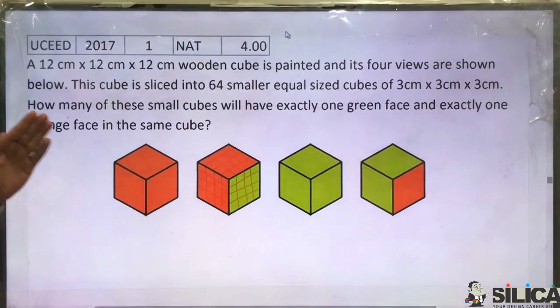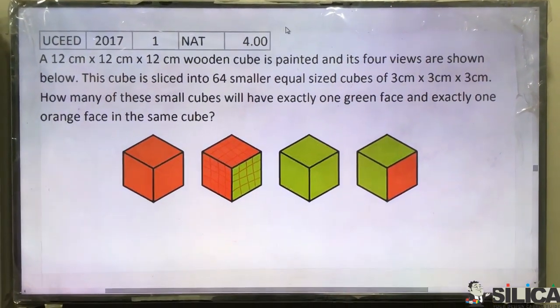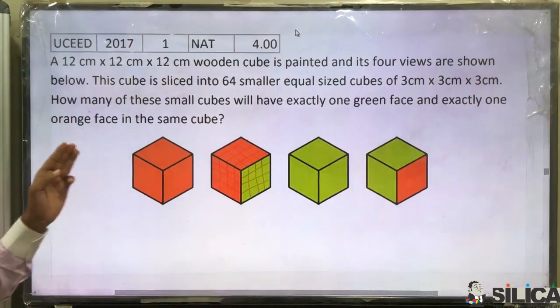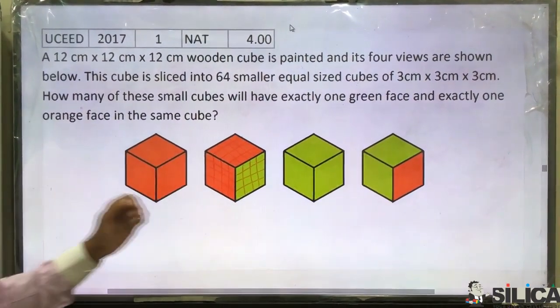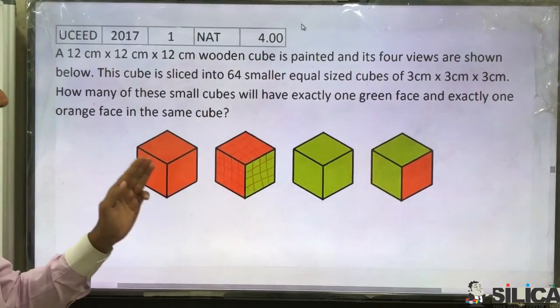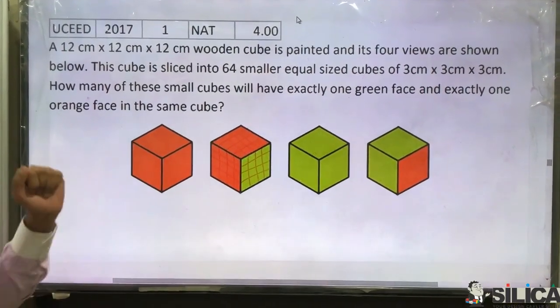This is an anatomy question for 4 marks from UCEED 2017. A 12 cm x 12 cm x 12 cm wooden cube is painted and its four views are shown below. The cube is sliced into 64 smaller equal sized cubes of 3 cm x 3 cm x 3 cm.